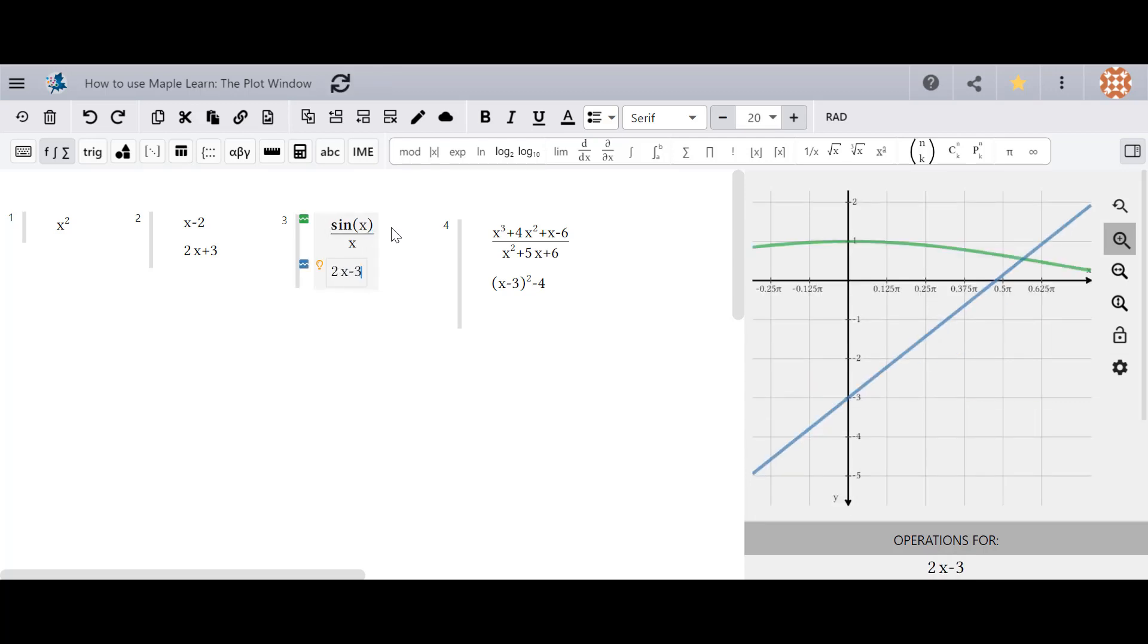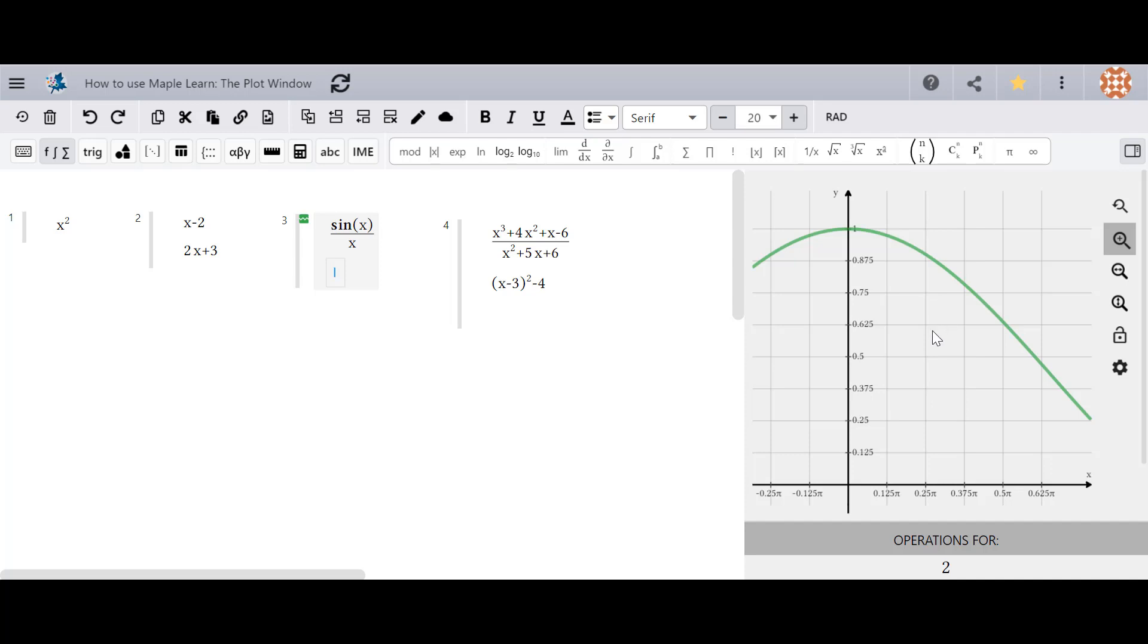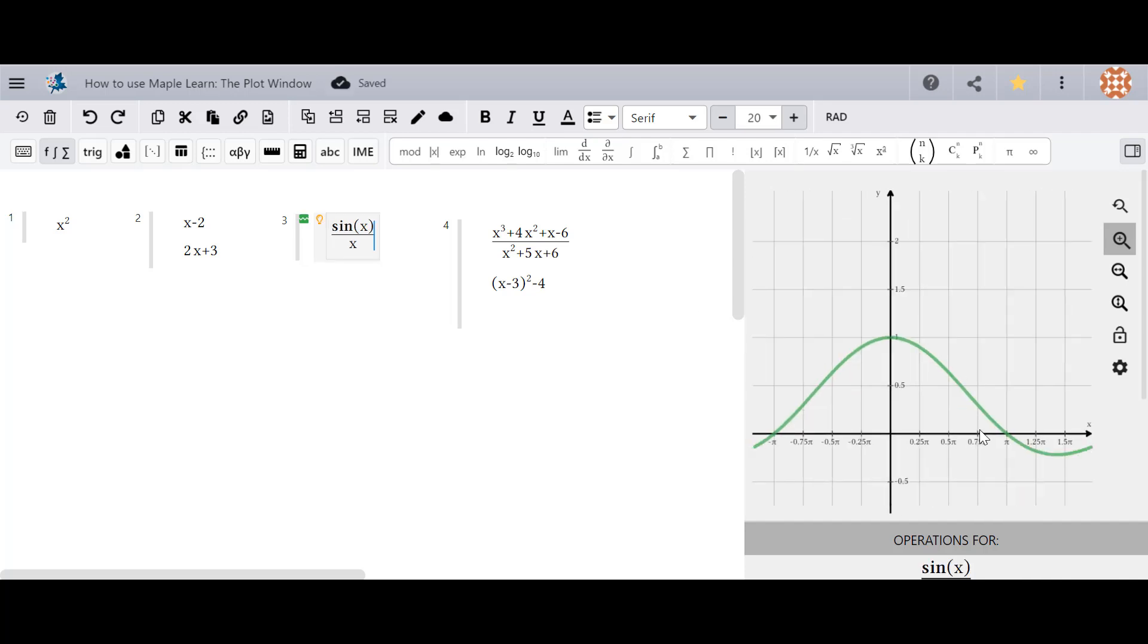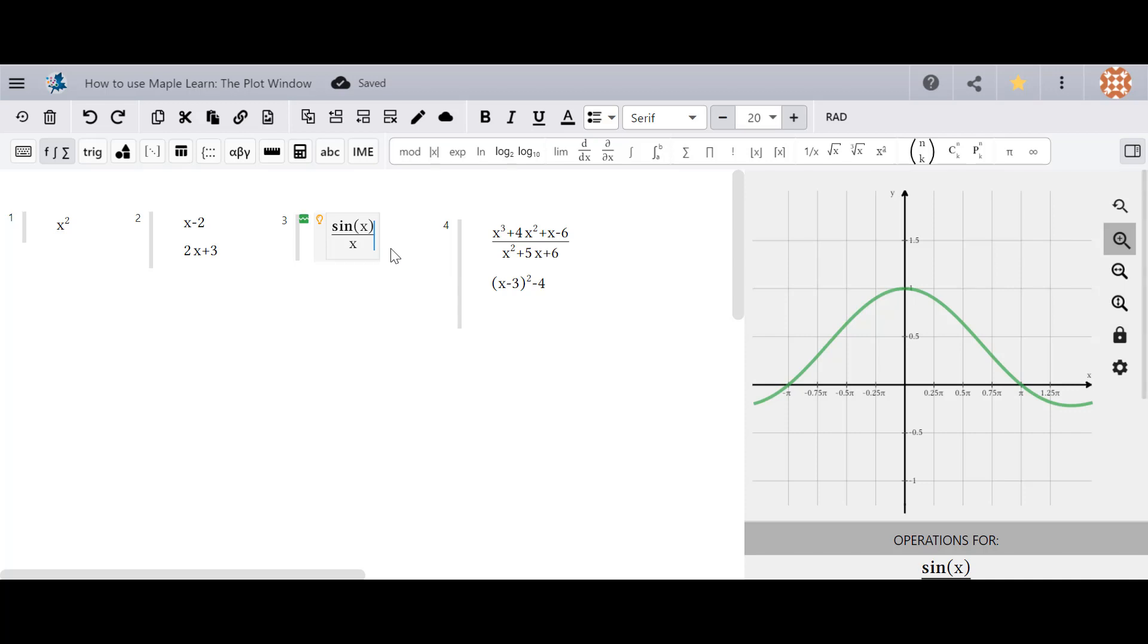For example, if I type this equation in now, you'll see that MapleLearn changes the view. If I delete it and zoom to a view that I like better, I can then lock the view. Then when I add 2x minus 3, it still appears in the same place.